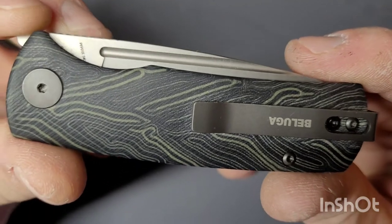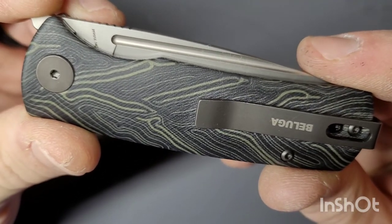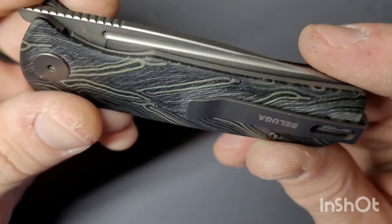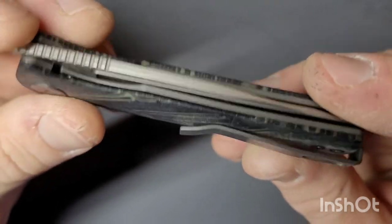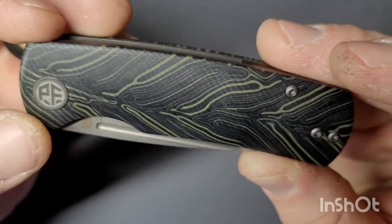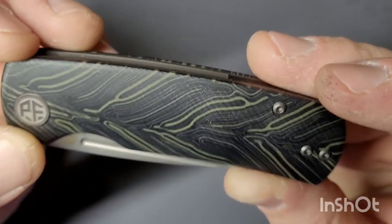I got the Stone Wars blade with the green Gmascus scales. I like the way that looks. PF for Petrified Fish.